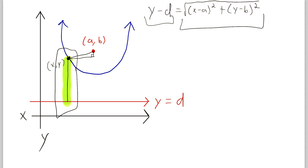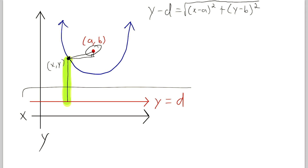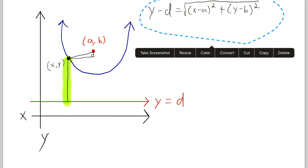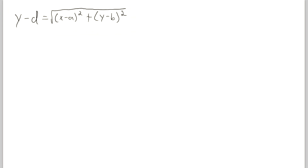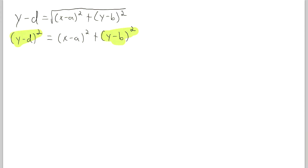Now we're going to take this expression to a new page to do some serious algebra. For starters, let's square both sides to get rid of the radical. So we have (y minus d) all squared — remember, we have to square the entirety of the left side — equal to (x minus a) squared plus (y minus b) squared. Now we want to get y by itself, so we're going to expand the terms that have y in them.